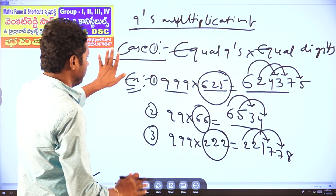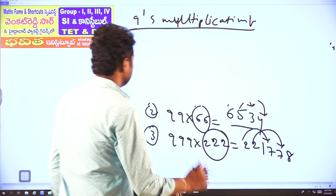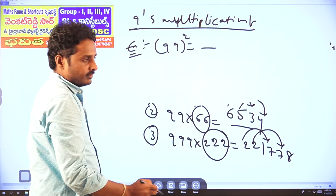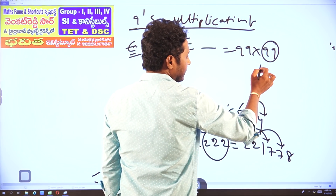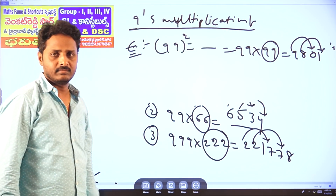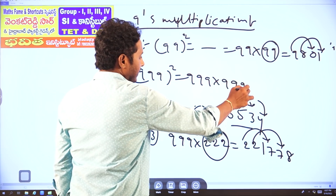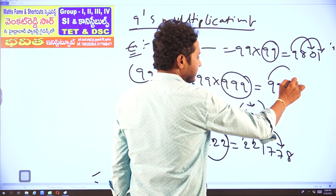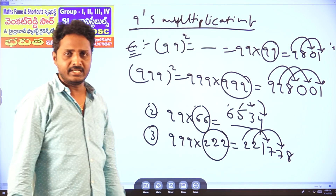Another example for Case 1 — equal 9s, equal digits. 99 whole square means 99 × 99 — equal 9s, equal digits. Decrease 99 by 1 gives 98. Then: 9 complement 9 is 0, 8 complement 9 is 1. Answer: 9801.